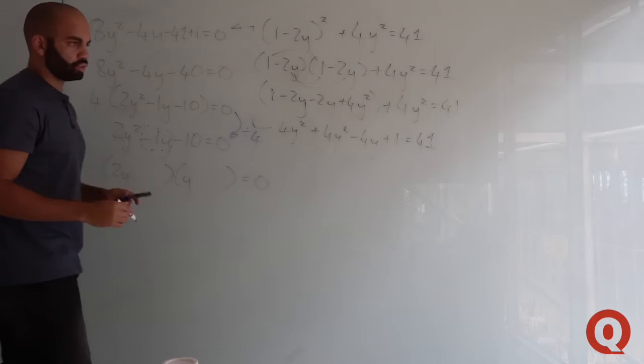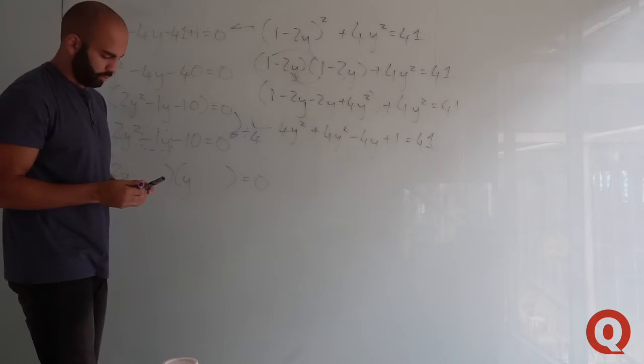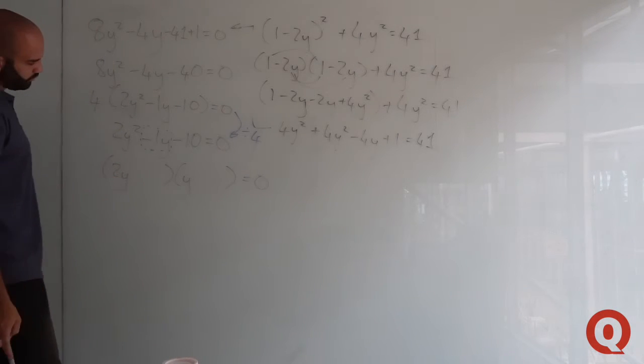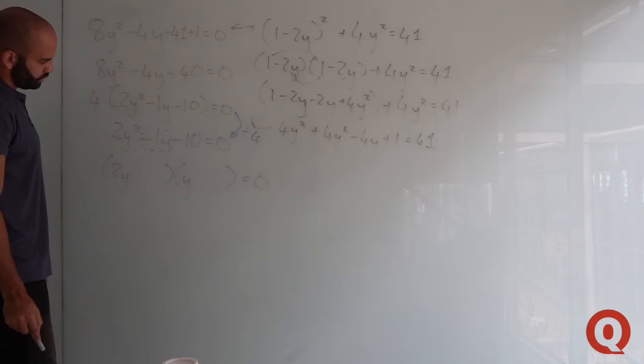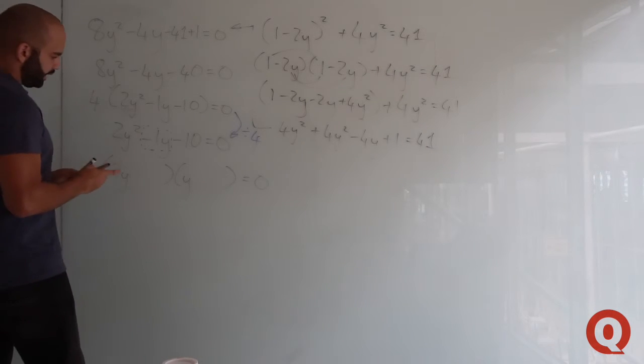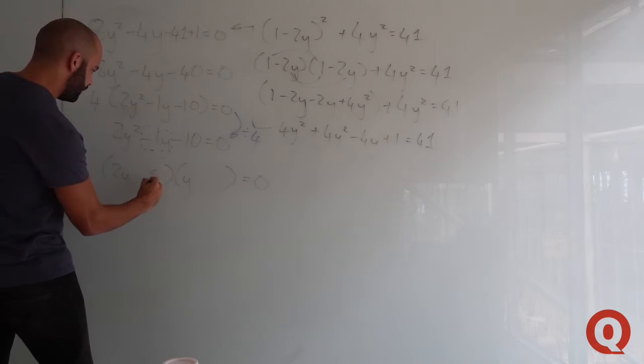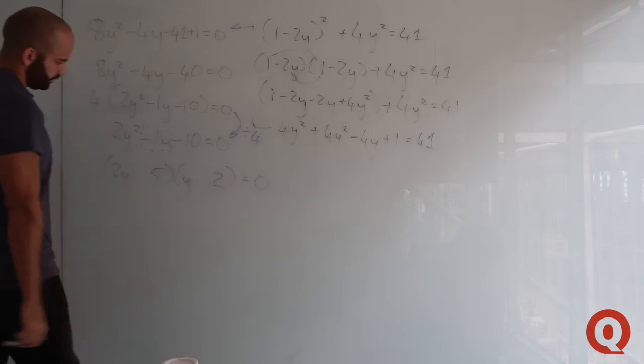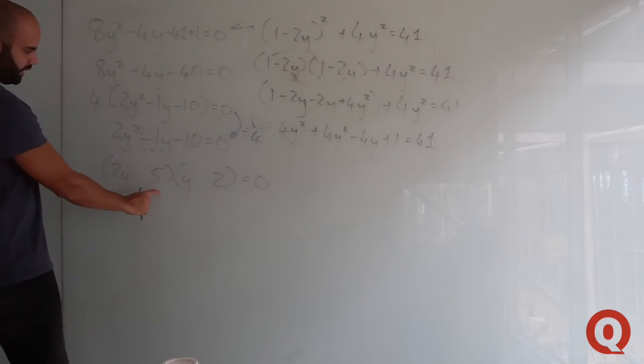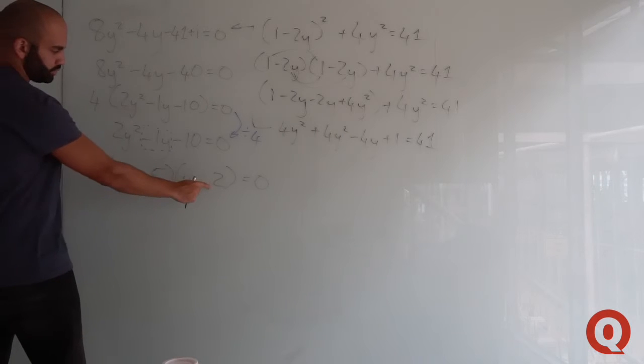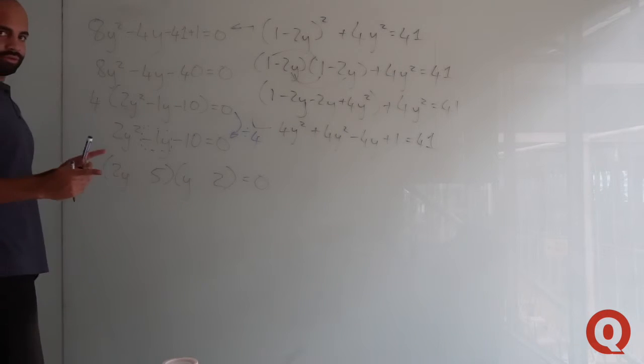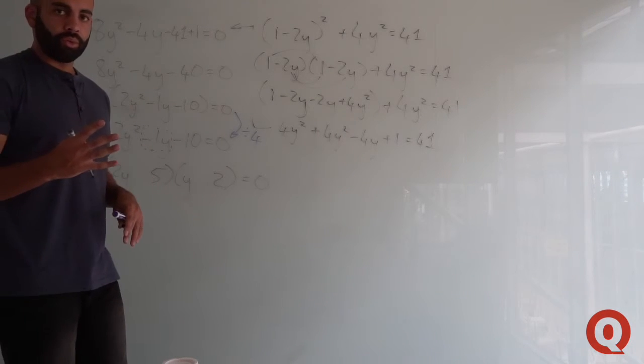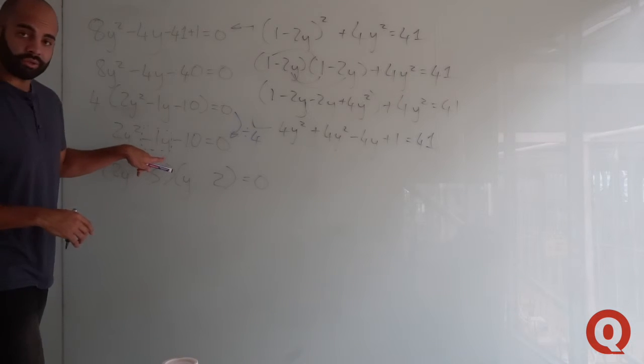What are the closest factors you could use? If you've got 2y and minus 5, and y and plus 2, because 2y times 2 gives 4y, and y times minus 5 gives minus 5y. The difference of 5y and 4y gives you 1y.